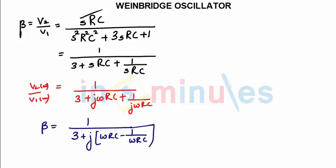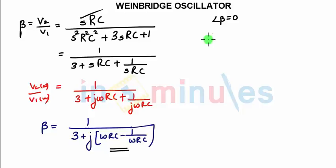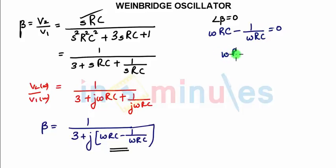Applying the Barkhausen criteria: the phase shift between the feedback and the amplifier should be zero, that is angle A·β should be zero, meaning the imaginary part should be zero. This implies ω·R·C minus 1/(ω·R·C) should be zero, which gives ω·R·C = 1/(ω·R·C), or ω² = 1/(R²C²).